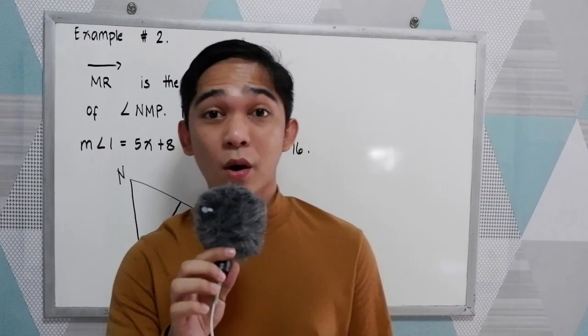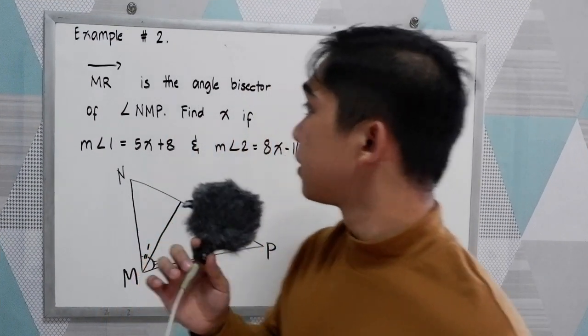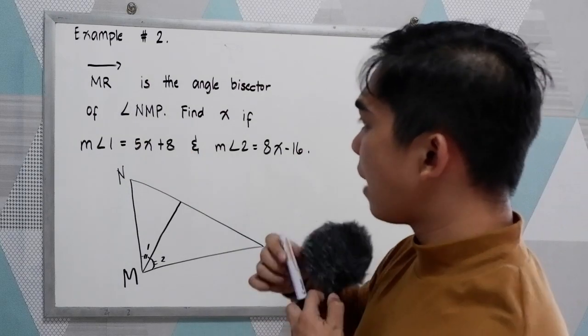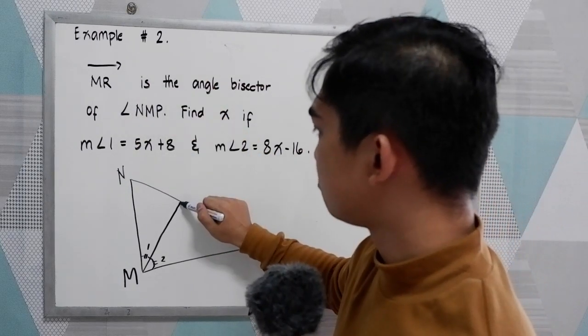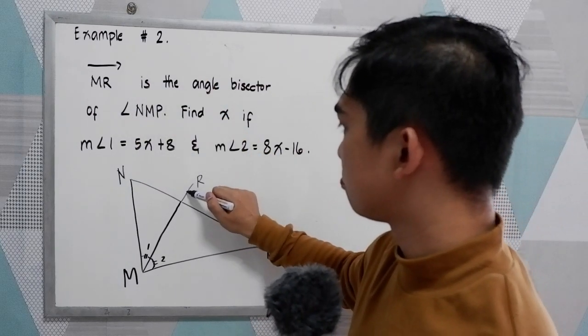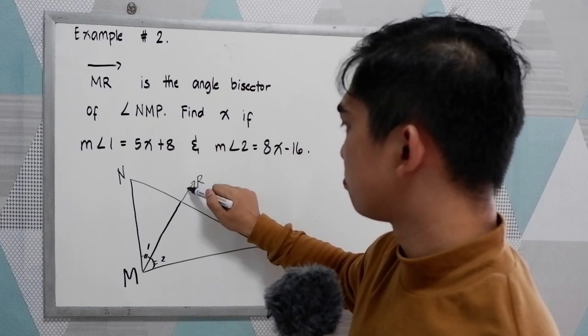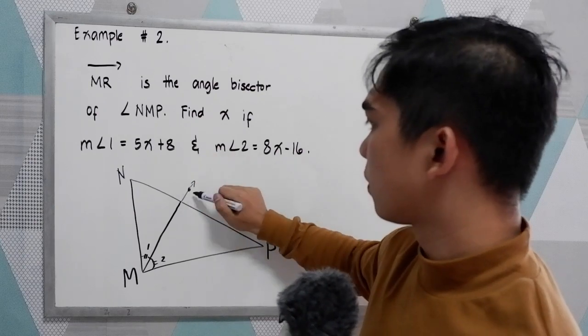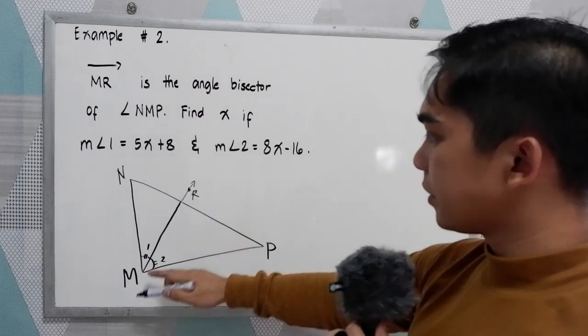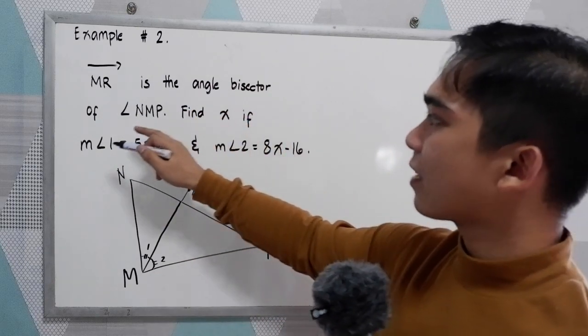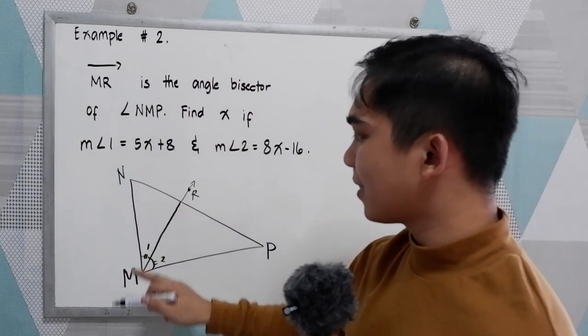Now, our example number two. Ray MR is the angle bisector of angle NMP.